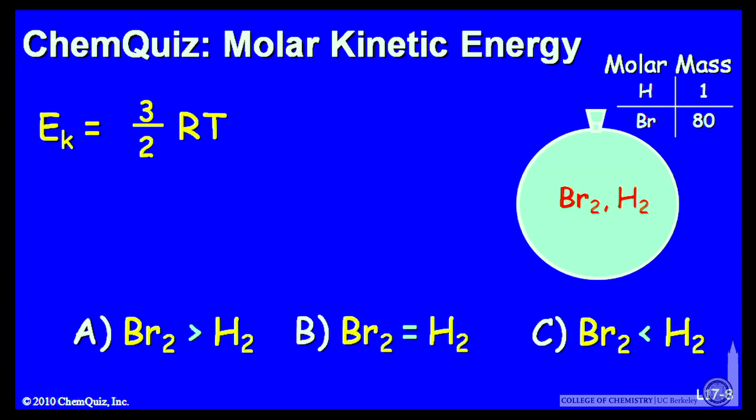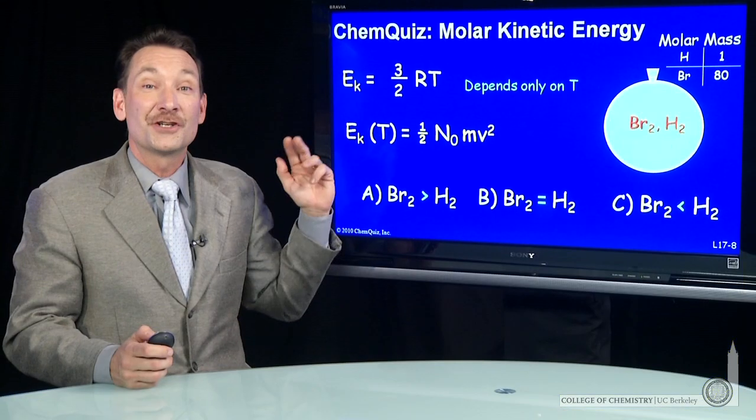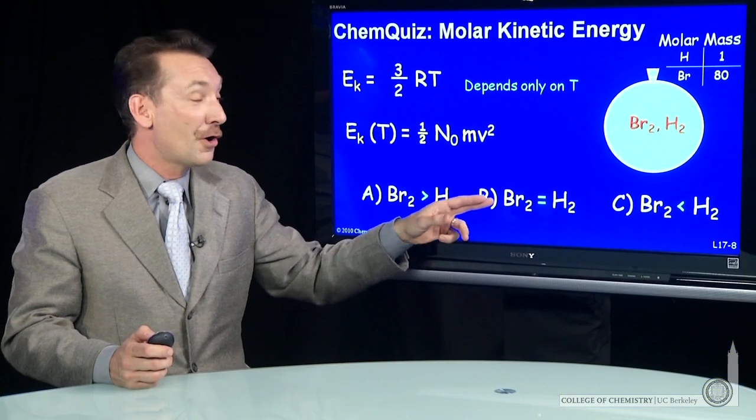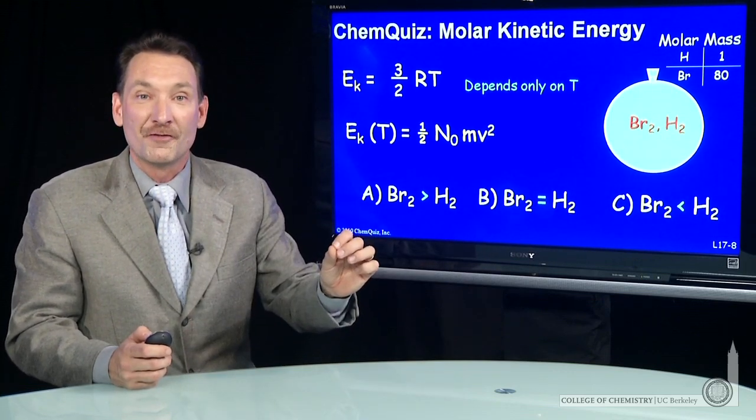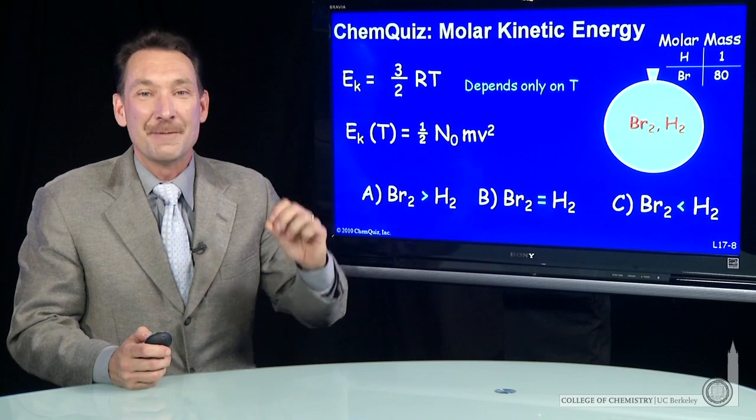Kinetic energy of a gas is 3 halves RT, so that depends only on the temperature. Kinetic energy of a gas given here is a function only of the temperature, so bromine and hydrogen have the same kinetic energy, same number of moles, same temperature, same kinetic energy.